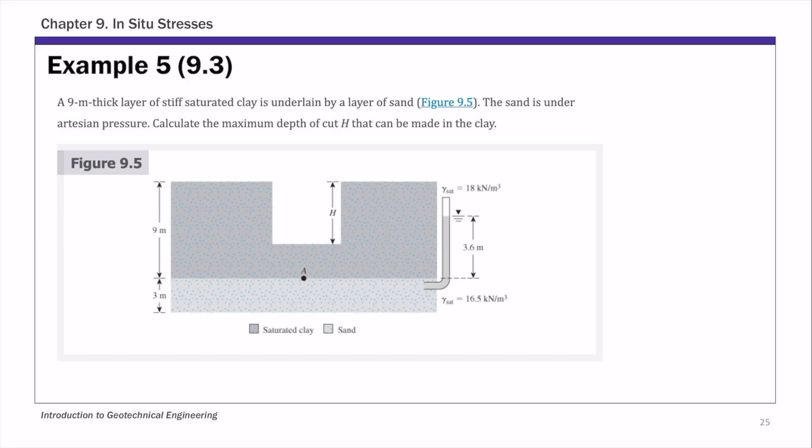This is example 5 of chapter 9 on effective stress. For this example, we are given a 9 meter layer of stiff saturated clay sitting on top of a layer of sand. So we have a sand layer at the bottom.